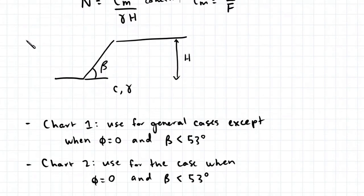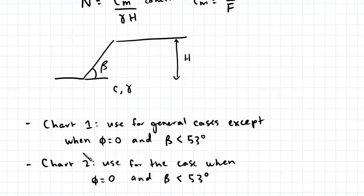Taylor produced two charts which we can use in undrained analysis. Chart one is used for general cases, except for when the angle of friction of the soil is equal to zero and when the angle of the slope is less than 53 degrees. Chart two is used for the specific case when the angle of friction of the soil is equal to zero and when the slope angle is less than 53 degrees.